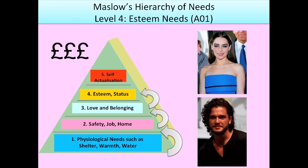The fourth level on the hierarchy is esteem needs. It's talking about self-esteem, but in particular it's looking at your esteem in society — how do people view you? It often involves things like wealth and success. Photos of Emilia Clarke and Kit Harington, who are incredibly successful in their field, represent people who have their esteem needs met — they have a huge fan base and people respect what they do.